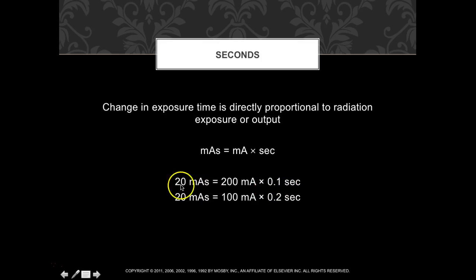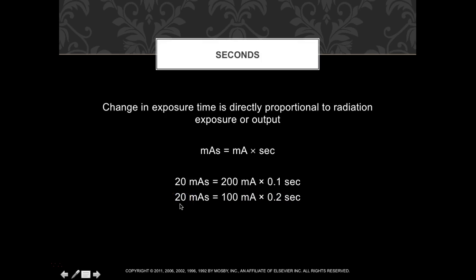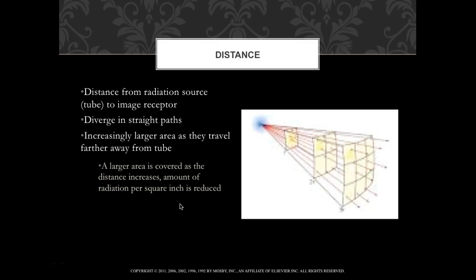For mAs calculation: mA × time = mAs. For example, 200 mA × 0.1 seconds = 20 mAs, or 100 mA × 0.2 seconds = 20 mAs. There are multiple ways to reach the same mAs using different mA and time combinations on your console. We always try to choose the fastest time possible to reduce motion artifacts.